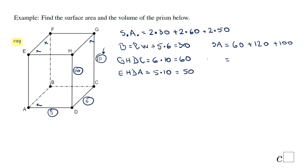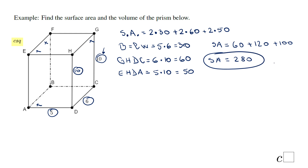We add these three values: 60 plus 120 plus 100 equals 280. We don't have any specific units, so we leave it as 280 square units.